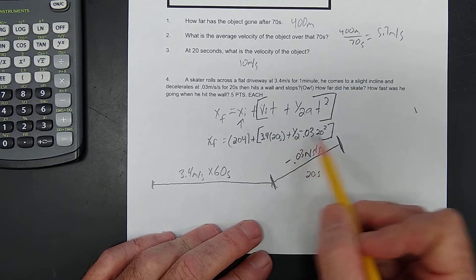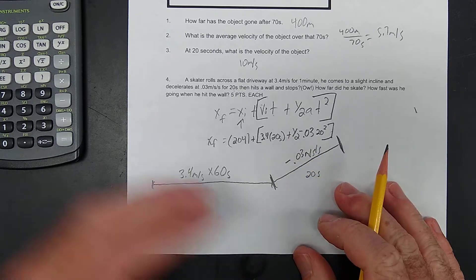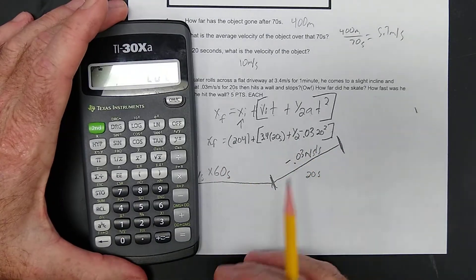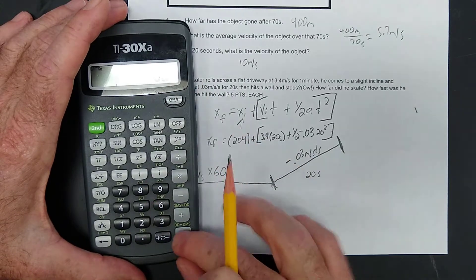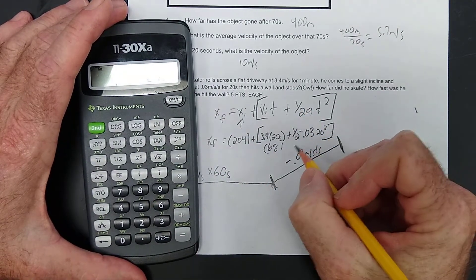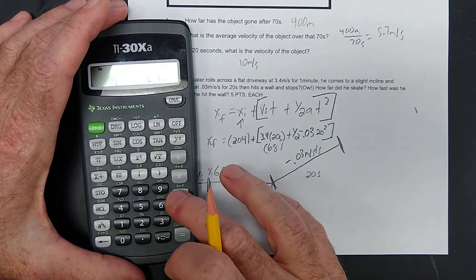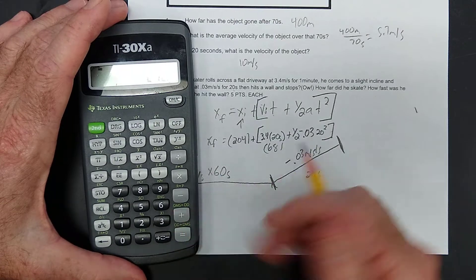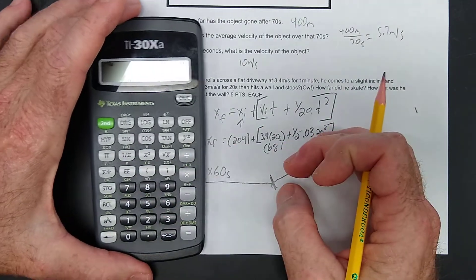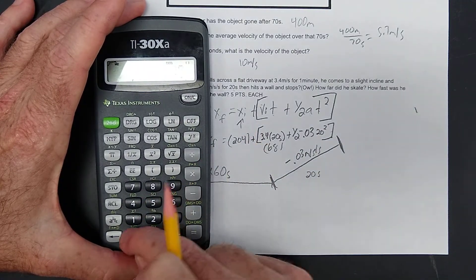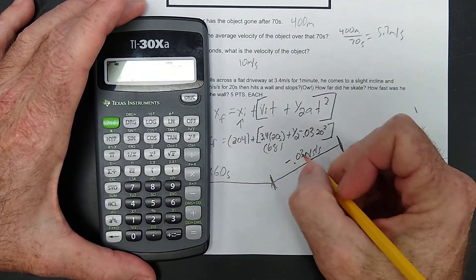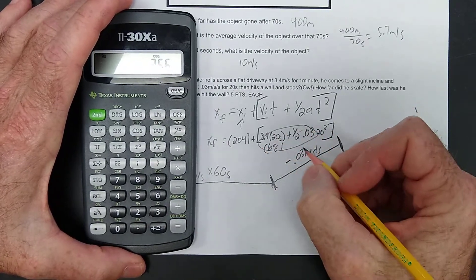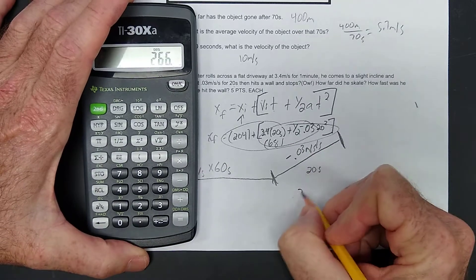Look, this is plus a negative, so this is going to end up being minus this number, right? Okay. So, 204 plus 3.4 times 20 equals, so this little part was 68, just so you know. And this is going to be plus, and we're going to put this in parentheses, .5 times .03 negative times 20 squared, close parentheses, equals. This total in this box is going to be 266. The total for the whole thing is going to be 266 meters total.